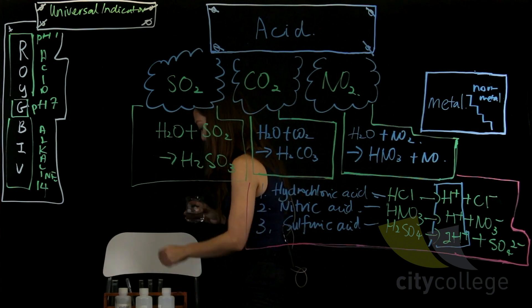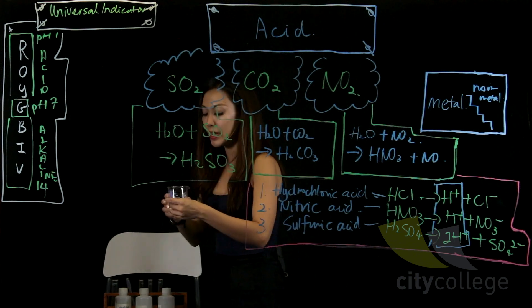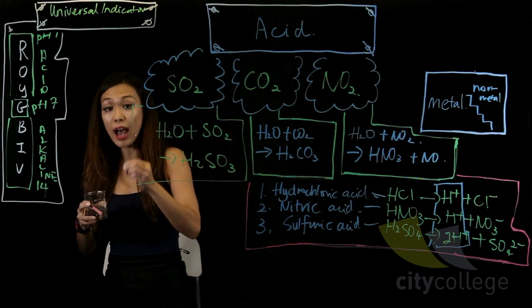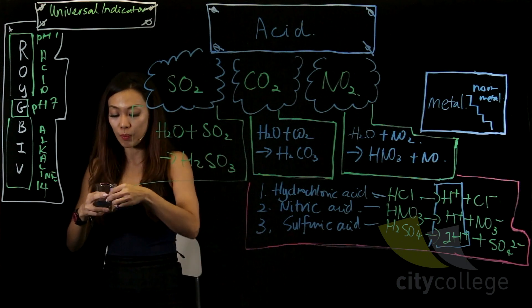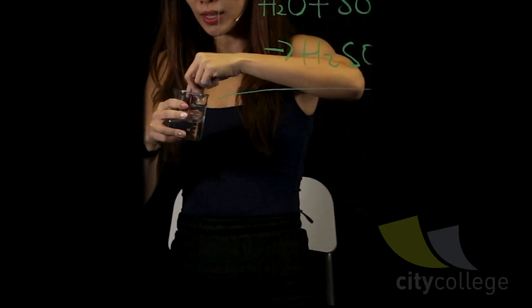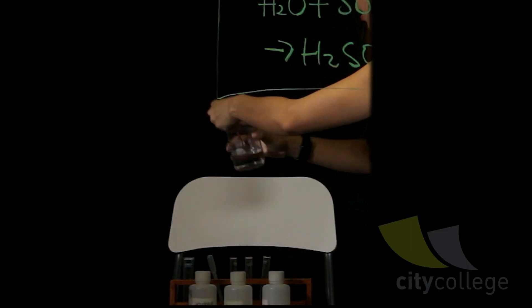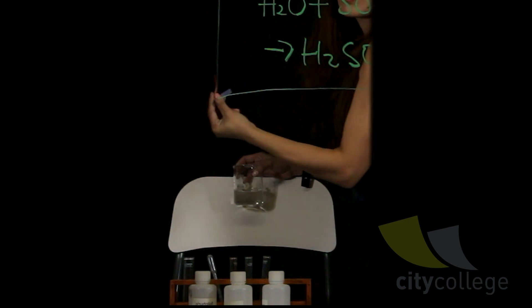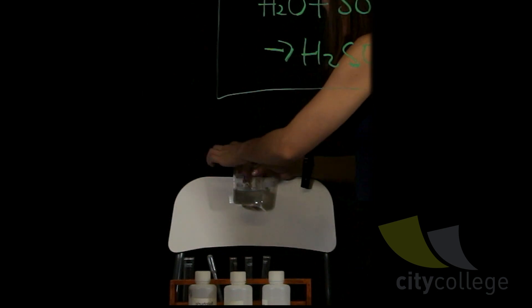Now before I put in the universal indicator, you can also use two things: either blue litmus paper or red litmus paper. Let me see if I put the red litmus paper in - any color change? Nothing, because this is acid. But if I put the blue one in...